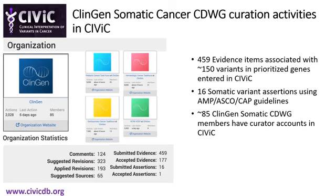In CIVIC, ClinGen and somatic disease task forces are set up as separate organizations so that one can easily access the curated data entered by each of these task forces. Here you can see a summary of the somatic cancer CDWG's curation activities in CIVIC. The somatic pediatric, hematological, and genitourinary cancer task forces have collectively curated 459 evidence items in CIVIC for about 150 variants. Relevant evidence items have been summarized to create 16 somatic variant assertions. To date, about 85 members from the somatic CDWG have contributed to curation activities and variant interpretation in CIVIC, and we are also accepting volunteer curators to join our group.